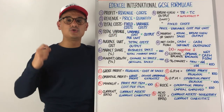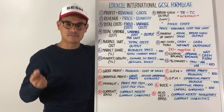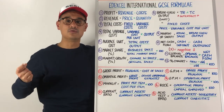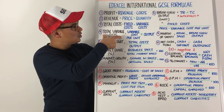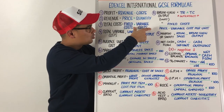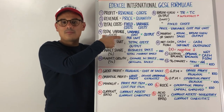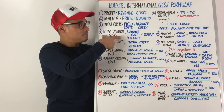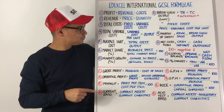Fixed costs are those costs that do not vary with output. Variable costs are clearly those costs that do vary with output. Number four is total variable costs. If you need to calculate your variable costs, remember that it's variable cost per unit times by your output.